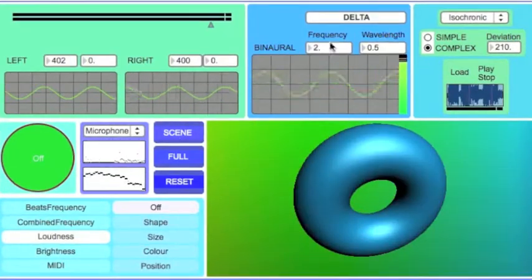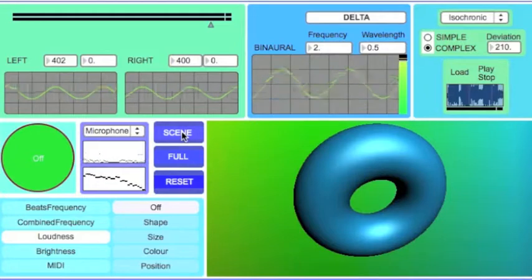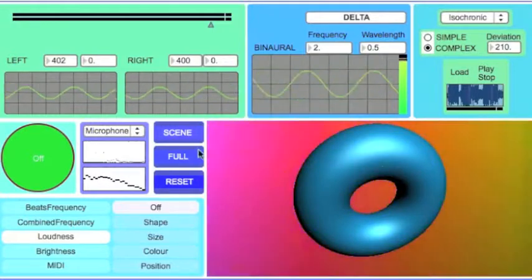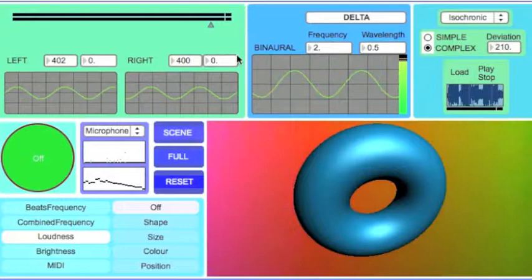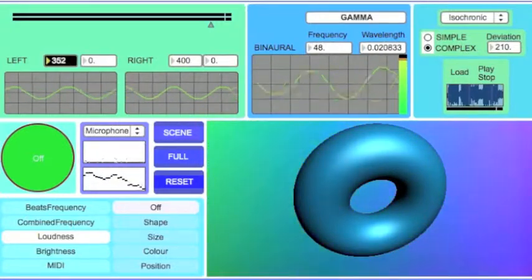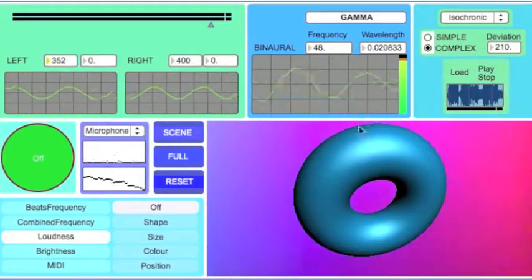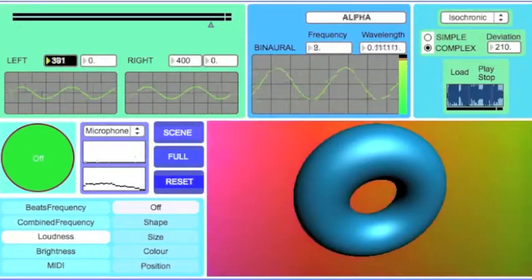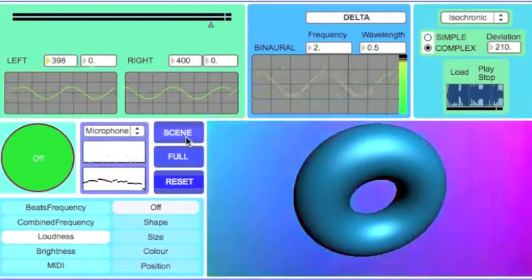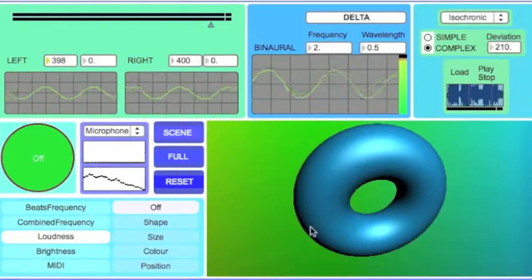One last thing as well, this binaural frequency is controlling the background. So if we just click the scene button, we can see that the background color is changing direction. It's rotating at a frequency of 2. But if we change this to and increase it, it'll take longer to rotate the color. So the lower the binaural, the quicker the background rotates. And then we can also turn it off as well to get our standard background color.